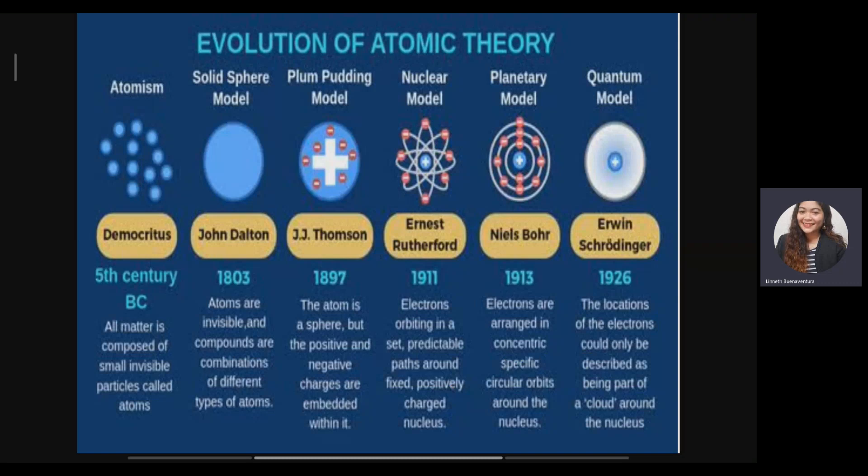The planetary model helps us identify the configuration of electrons or where we can find them. Lastly, Erwin Schrödinger in 1926 introduced the quantum model. According to him, the location of an electron cannot only be described in terms of planetary orbits, but also as part of a cloud around the nucleus. Electrons found near the nucleus are easier to find, while those farther away are harder to find.